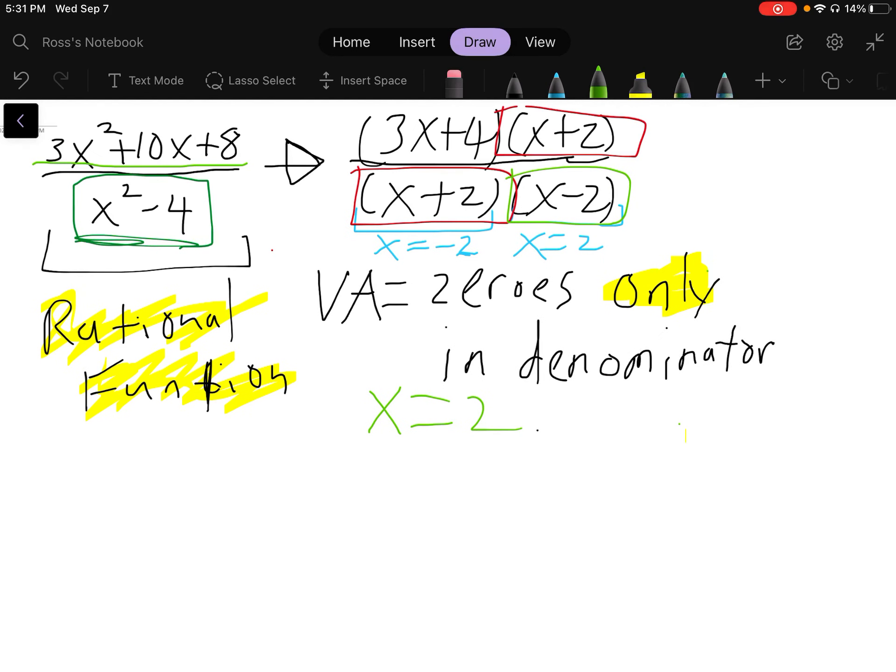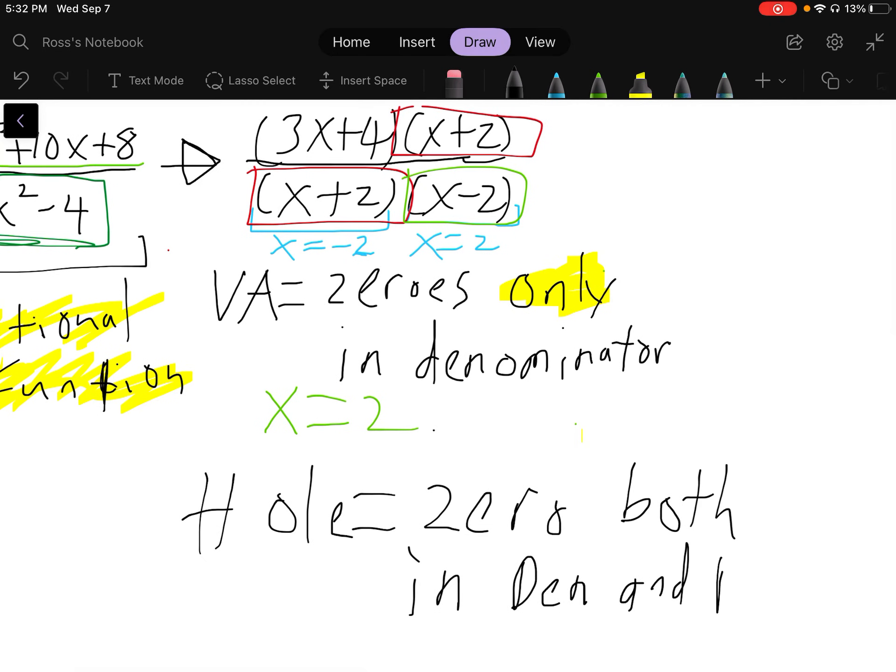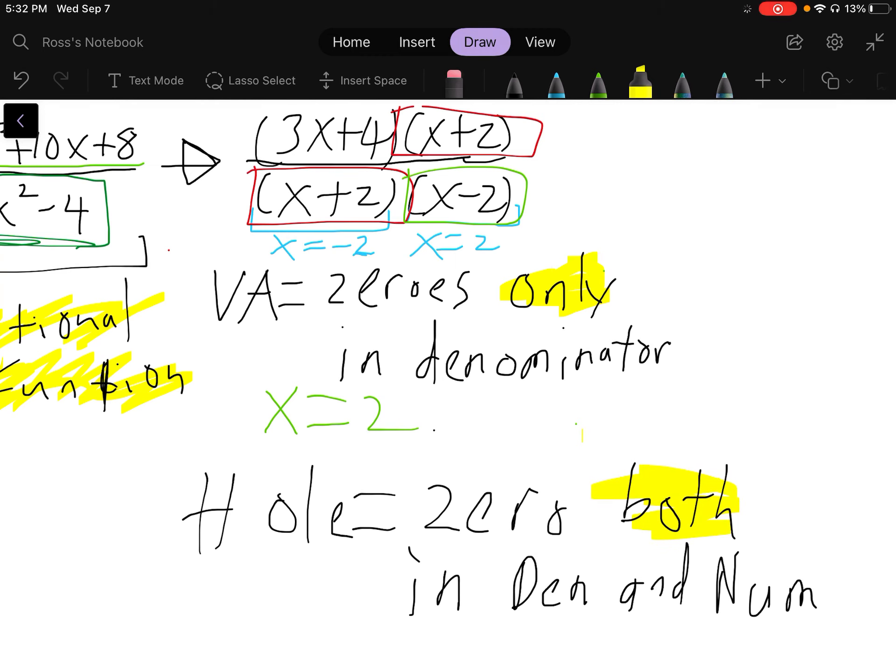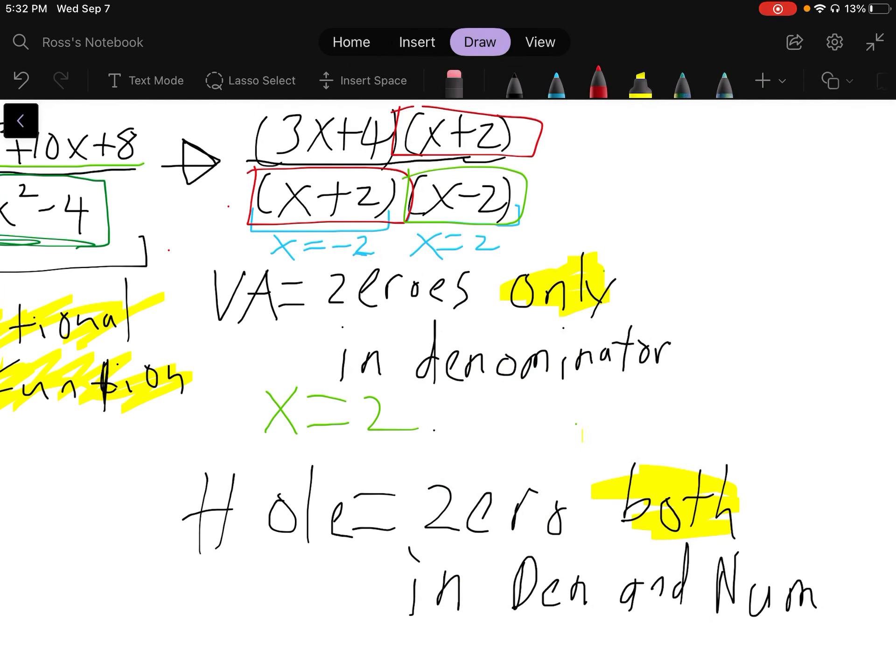That's VA, make sense? Now holes, or a hole, is a zero in both denominator and numerator. Holes is there both in denominator and numerator.